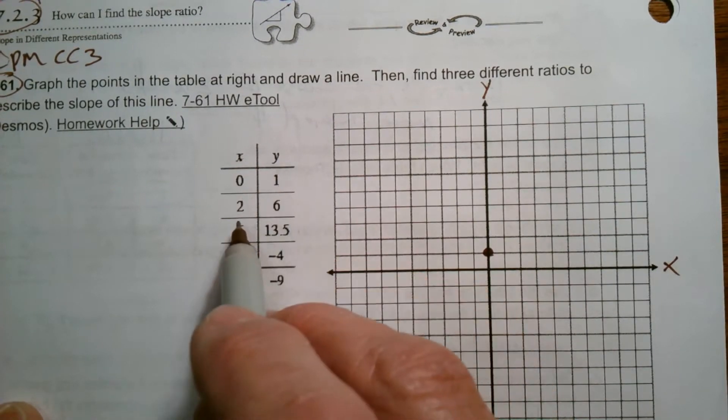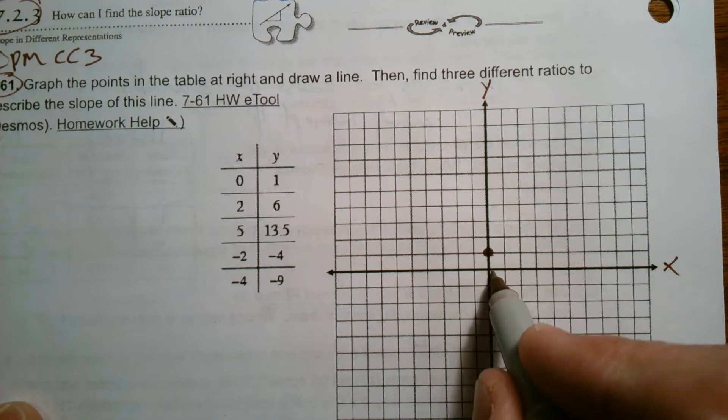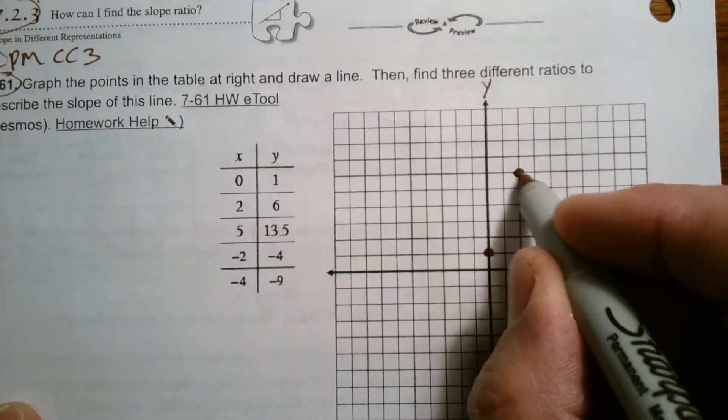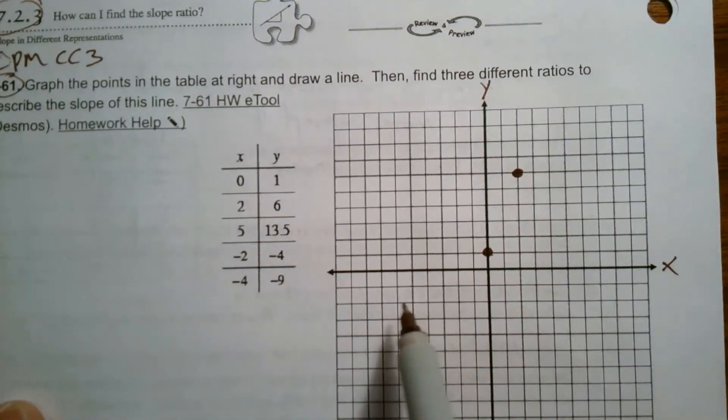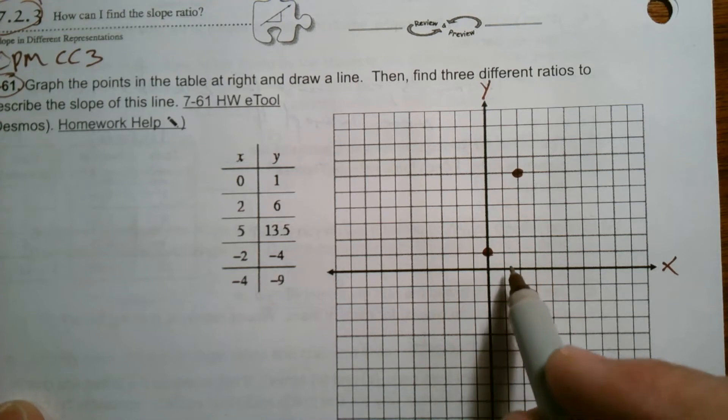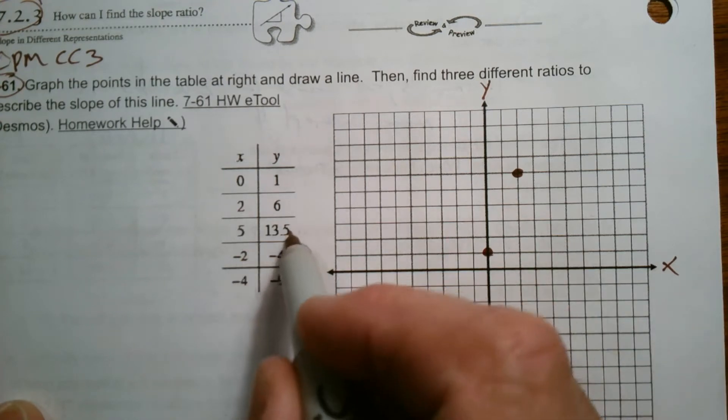Zero comma one. Two comma six. X is two, Y is six, right there. Five, thirteen point five. Ooh, that might not fit on my graph. I'm going to skip that one for now.